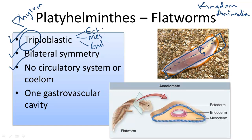Third, there's no circulatory system and there's no coelom or body cavity. And fourth, there's one gastrovascular cavity. Nutrients come in the same passageway that wastes are excreted out of.